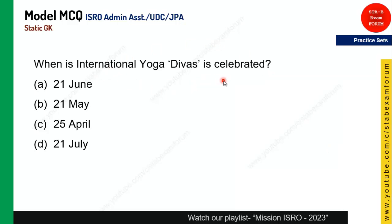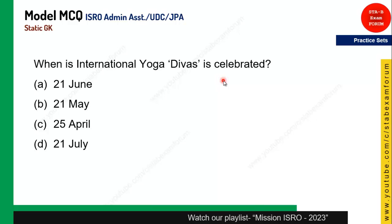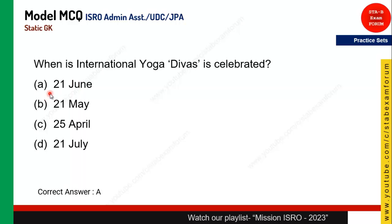This is a very easy one — your timer starts now. This is a very important question because it was started with India. You can say India preceded the UN in celebrating this particular day, and the answer is 21st June. Those who answered 21st June are correct.